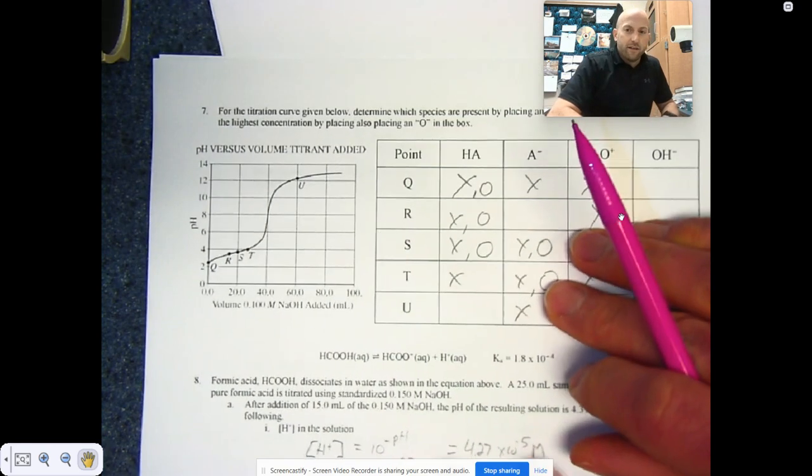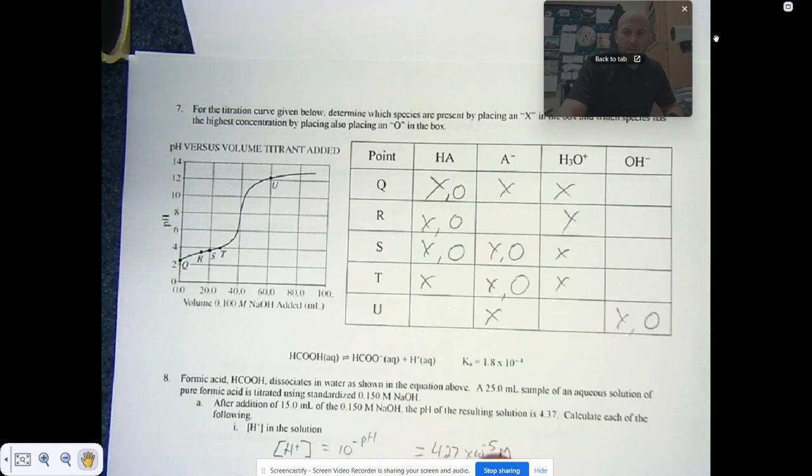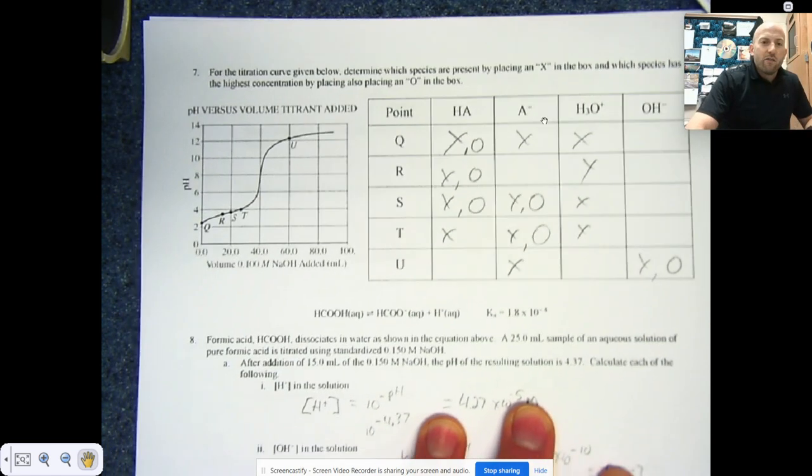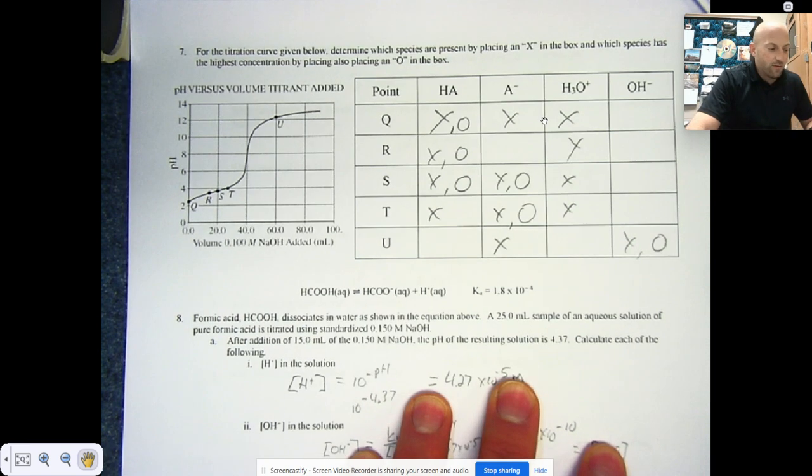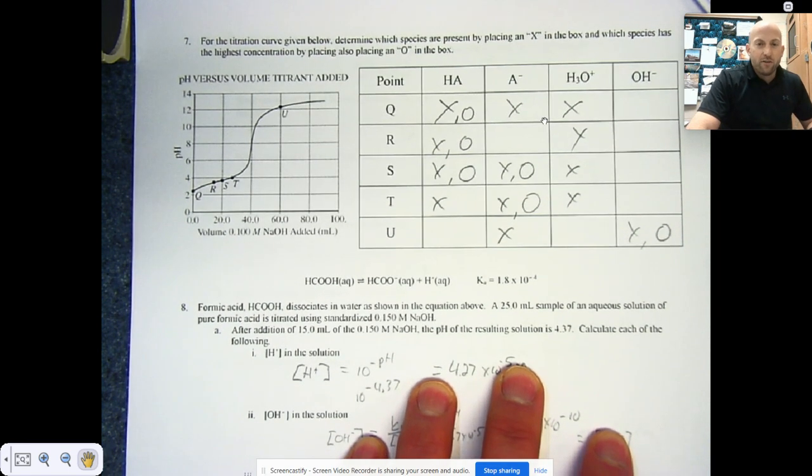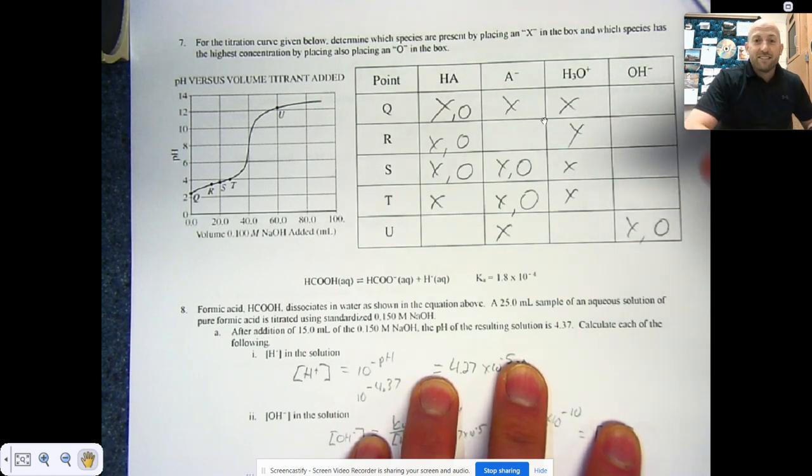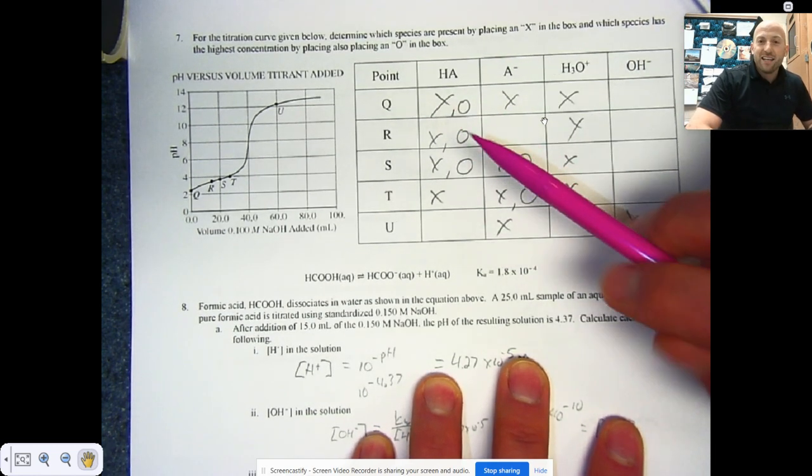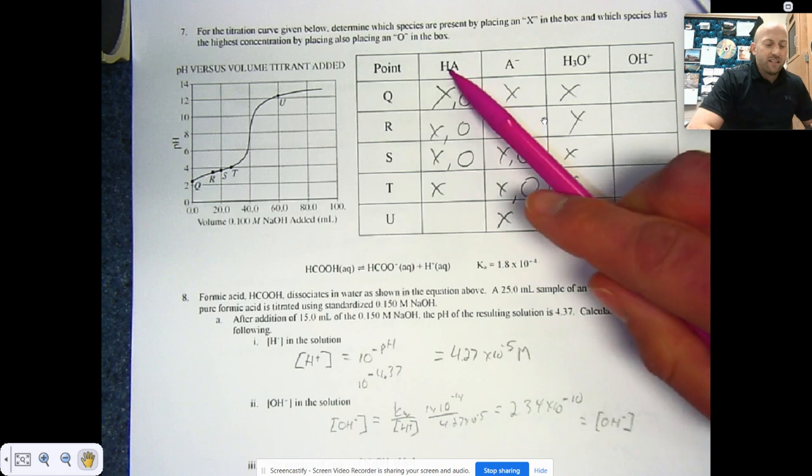Number seven, I'm going to give you because I think it's a little bit confusing here. It says for the titration given below, let's move this guy out of the way. You don't really need to see me anyway. For the titration given below, determine which species. When it says species, it's not asking for a didelphis virginiana or anything like that, it's a Virginia possum in case you were wondering. A balaenoptera musculus, there's your blue whale.